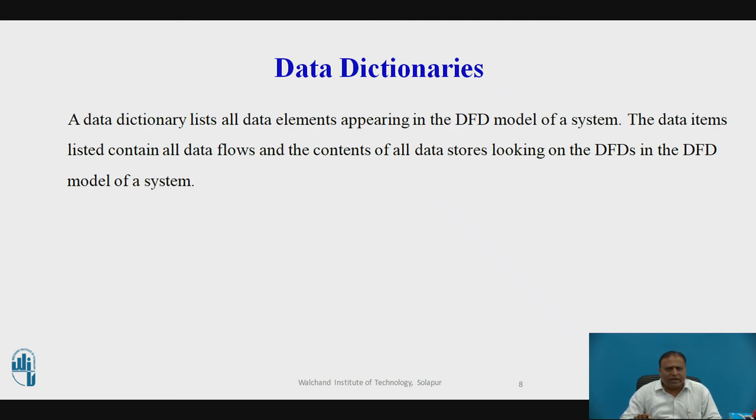The next part is the data dictionary. A data dictionary lists all the elements appearing in DFD model of the system. The data items listed contain all data flows and the contents of all data stores looking at the DFD in the DFD model of the system.